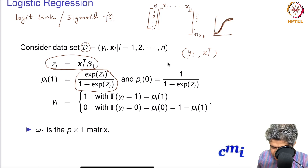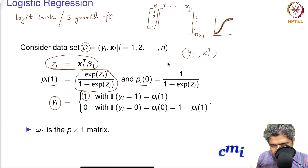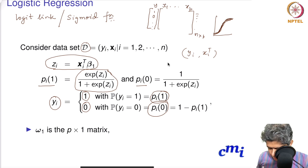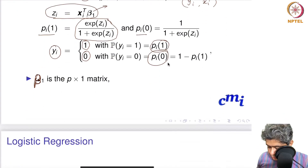We define pi_1 as the probability, and pi_0 is effectively 1 minus pi_1. For pi_1, we observe yi equal to 1 with probability pi_1 and 0 with probability pi_0, which is 1 minus pi_1. Beta here is a p-cross-1 vector.